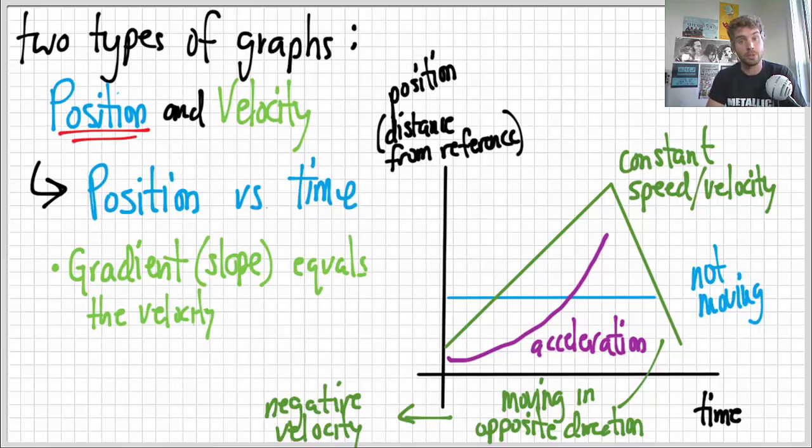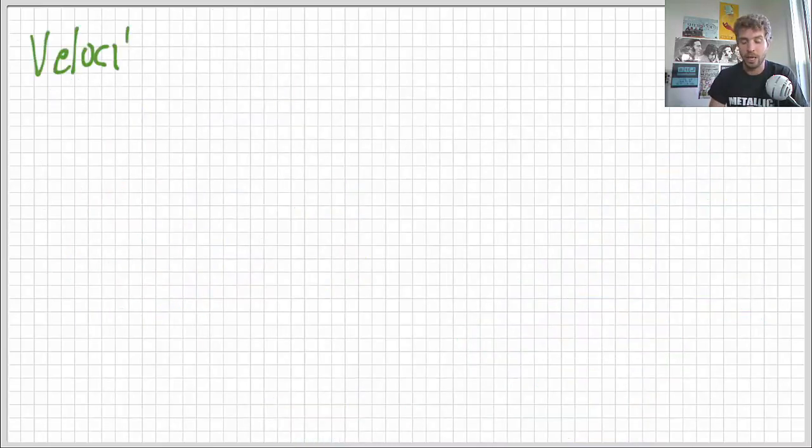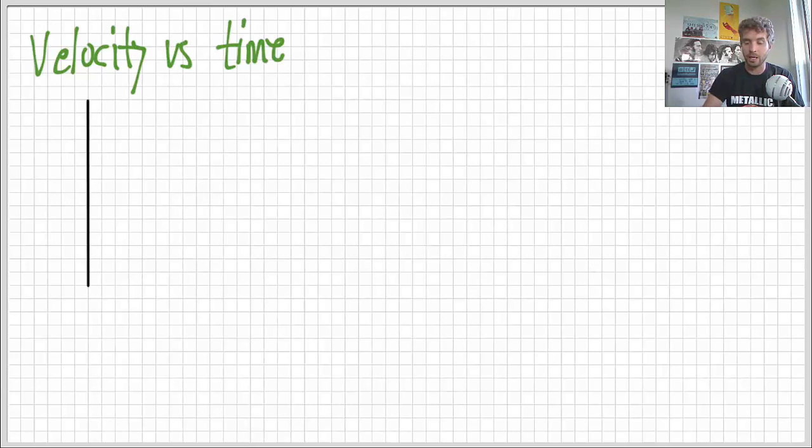All right. That's position versus time graphs. Let's look at velocity versus time. Once again, we're going to have X, Y axes. And once again, we're going to have time, which we can use just the t to represent. We're going to have time on that x axis. And then, of course, we have v, little v with a little line for velocity.